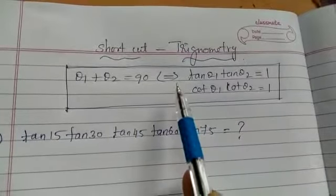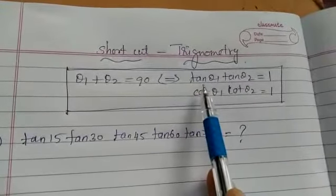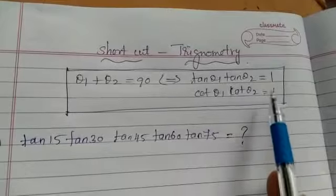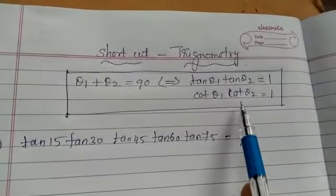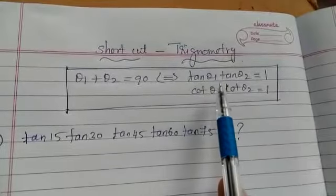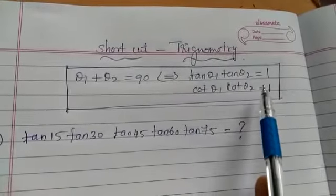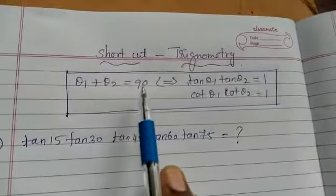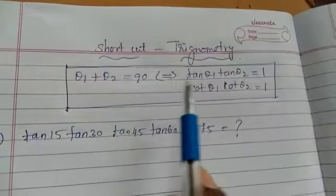And cot theta 1 into cot theta 2 equal to 1. The reverse also happens - that is, tan theta 1 into tan theta 2 equal to 1 implies then theta 1 plus theta 2 equal to 90 degree. Okay, so we will use this shortcut now.